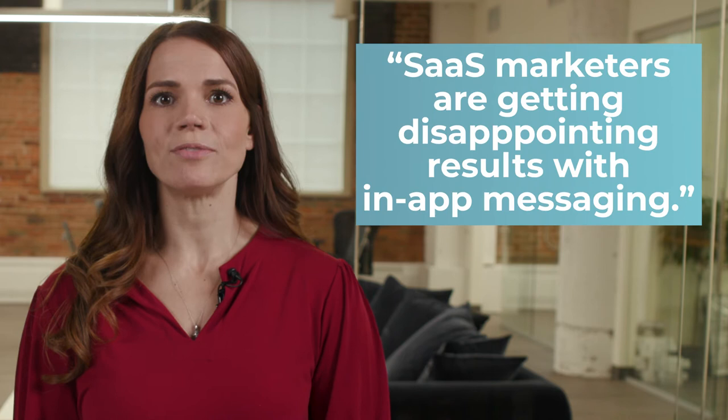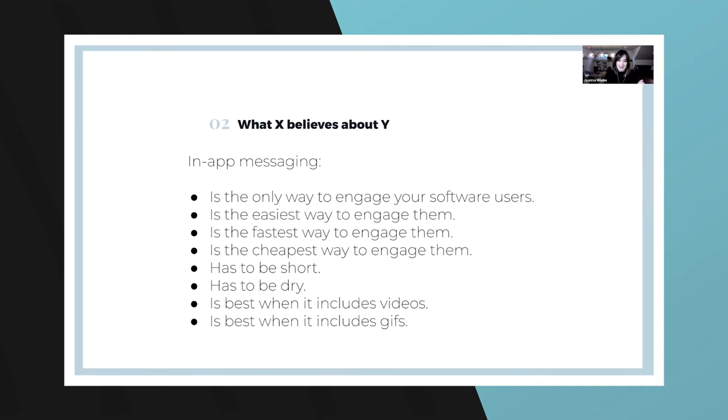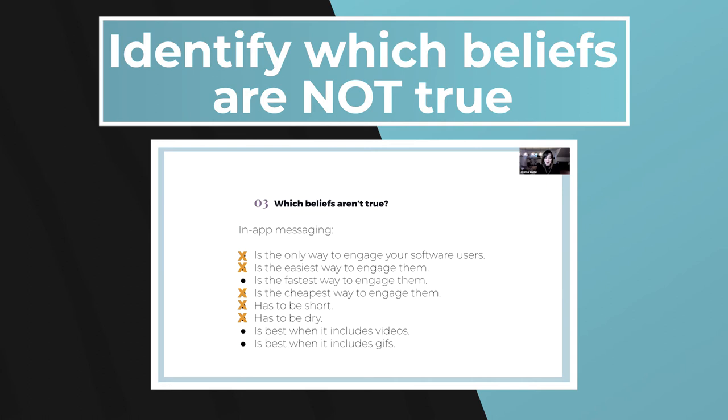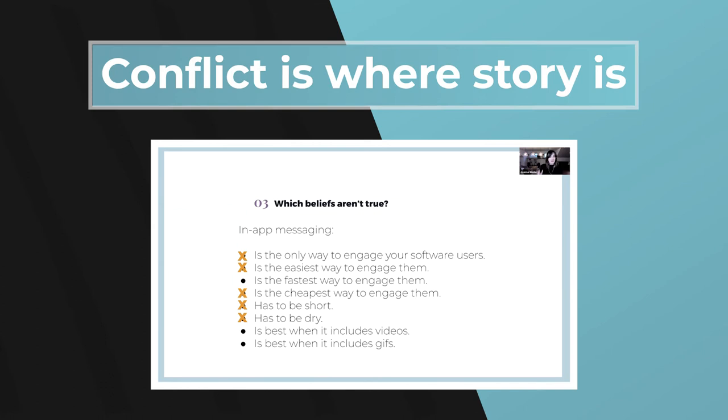So where do we find this conflict? It comes from a simple formula when looking at your ideal audience: look for things hidden inside the things your audience X believes to be true about Y. First, start with 'X are getting disappointing results with Y' — something like 'SaaS marketers are getting disappointing results with in-app messaging.' Then make a big list of all the things they believe about it. Go through and identify which beliefs are actually not true. Some will be true, but some are not. Anything with an X on it is potentially where there's conflict, and conflict is where story is — and that's where the best topics are.